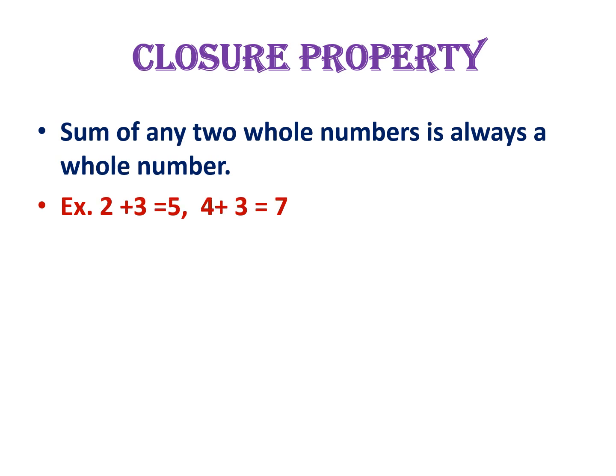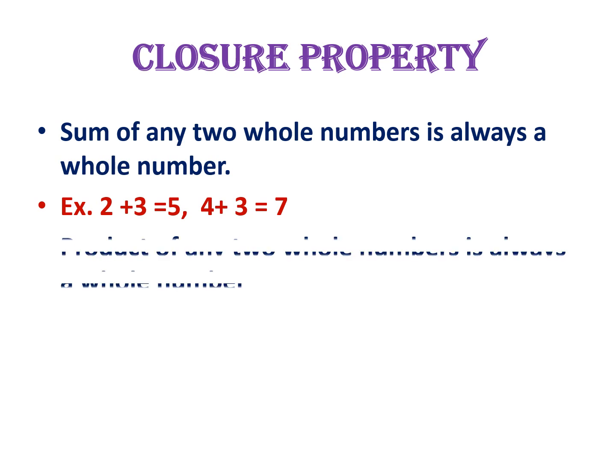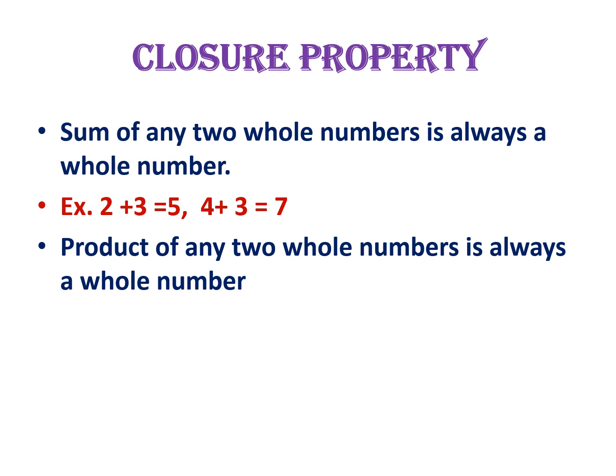For example, 2 plus 3 is equal to 5. Here, 2 and 3 are whole numbers and the sum of 2 and 3 is 5, which is also a whole number. In the same way, we can say that the product of any two whole numbers is always a whole number. Here, 2, 3, and 6 are whole numbers.